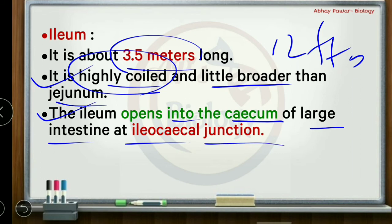The ileum connects to the cecum — the first part of the large intestine. It is more coiled and broader than the jejunum. Within the intestine there are glands: including Brunner's glands and the crypts of Lieberkühn, which produce various secretions important for digestion.